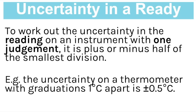Here's how we do the maths. The uncertainty in a reading from an instrument with one judgment is plus or minus half of the smallest division. So the uncertainty of a thermometer with graduations of one degree Celsius is ±0.5°C. That would be your uncertainty on the reading, and since most thermometers have graduations of one degree Celsius, it's pretty much always going to be that for a thermometer.